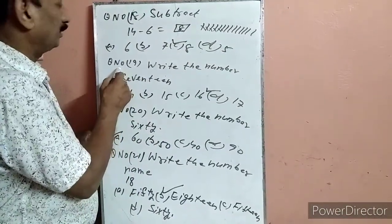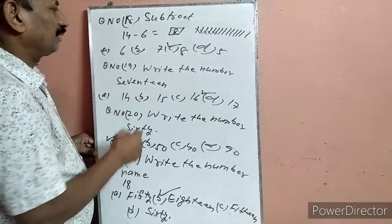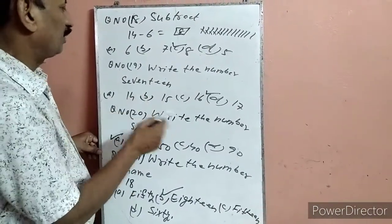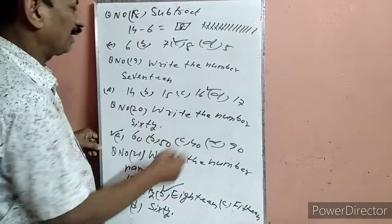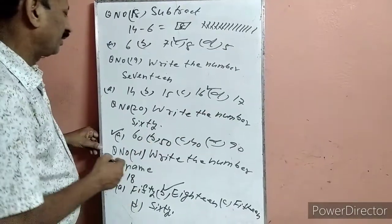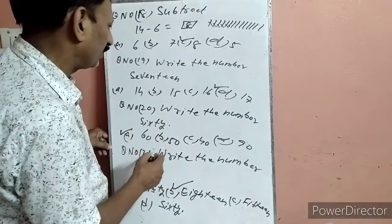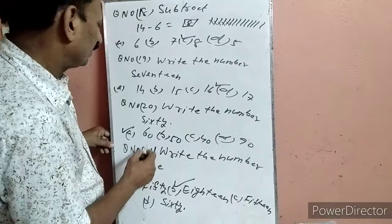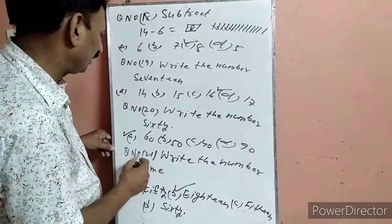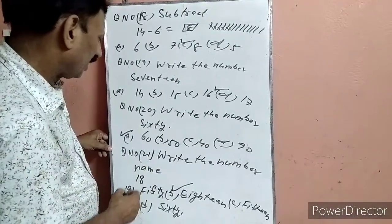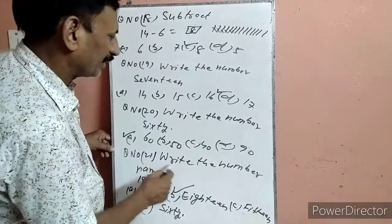Question 19: Write the number — number 17. वो number में देखें, कहां पर है — D पर है, टिक लगा दिया. Question 20: Write the number — 60. 61 option में A पर है, A पर टिक लगा दिया.